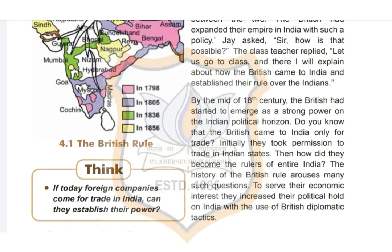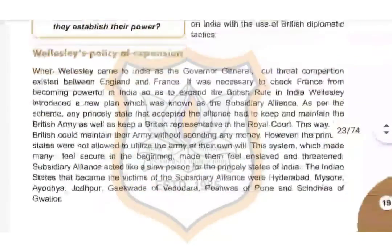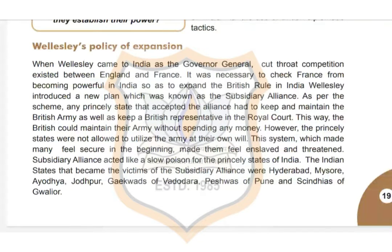To serve their economic interests, the British increased their political hold on India through diplomatic tactics. When Wellesley came to India as the Governor General, there was cutthroat competition between England and France. It was necessary to check France from becoming powerful in India. To expand British rule, Wellesley introduced a new plan known as the Subsidiary Alliance. Students, you can underline this — the question asked is: which plan was introduced by Wellesley?